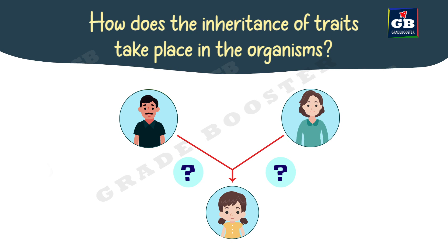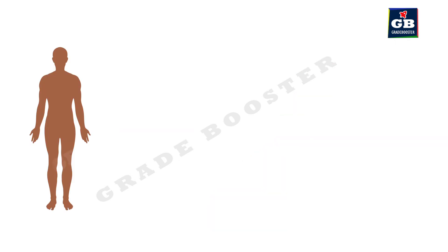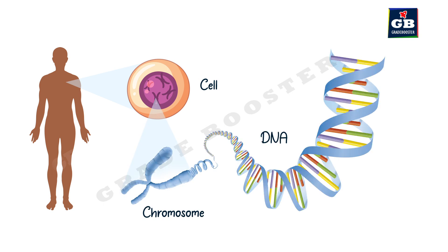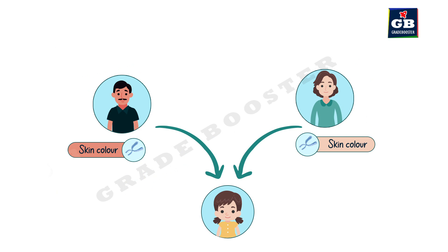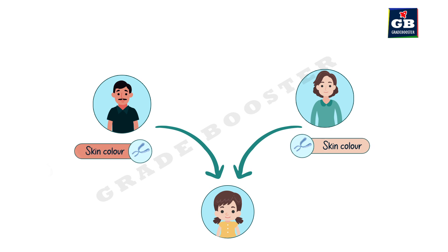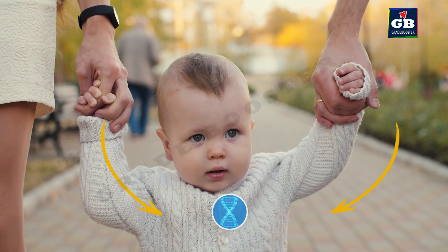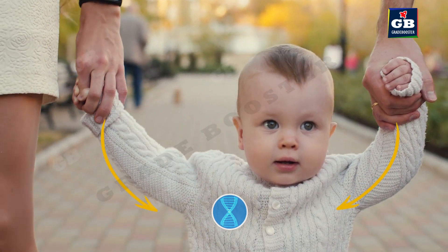The inheritance of traits takes place through the transfer of genetic material. In organisms, the genetic material is in the form of chromosomes. Chromosomes are made up of DNA, and DNA is made up of smaller units called genes. Every characteristic of an organism is controlled by a specific gene. During sexual reproduction, the father and mother contribute equal amounts of DNA, so for every individual characteristic the offspring gets two genes — one from the mother and one from the father. For example, the gene deciding skin color is contributed by both parents. We all inherit our characteristics from our parents — this is called heredity.